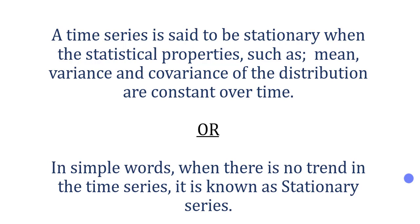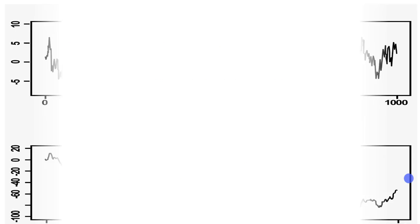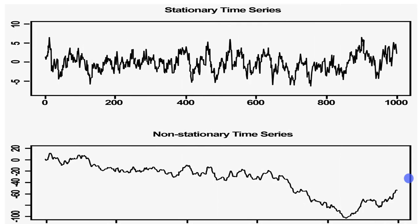In order to understand more, we can see the graphical illustration of stationary and non-stationary series. The first graph is about a stationary time series and the second one is of a non-stationary time series. In the first graph, there is data of one variable. There is no trend — there is a bit of fluctuation but no trend. The data is mean-reverting; it reverts to the mean, increases, and then reverts to the mean again.